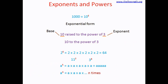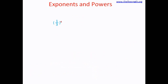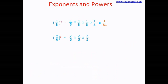So far we have dealt with bases that were whole numbers. How about a fraction? This is (1/3) to the power of 4 — we multiply it 4 times: 1/3 × 1/3 × 1/3 × 1/3. In the numerator, 1×1×1×1 = 1. In the denominator, 3×3=9, 9×3=27, 27×3=81. So the answer is 1/81. Another example: (2/5) to the power of 3 — multiply 3 twos in the numerator: 2×2×2=8, and 3 fives in the denominator: 5×5=25, 25×5=125. So the answer is 8/125.